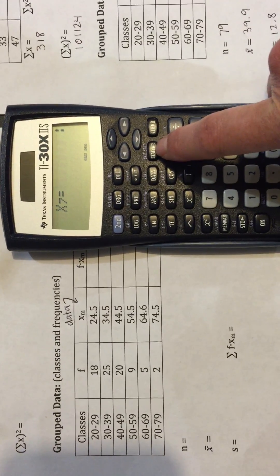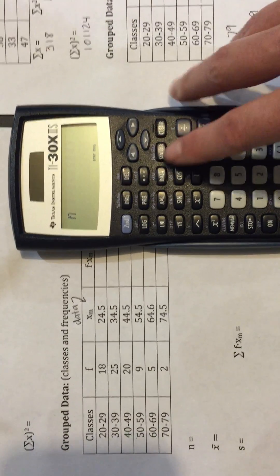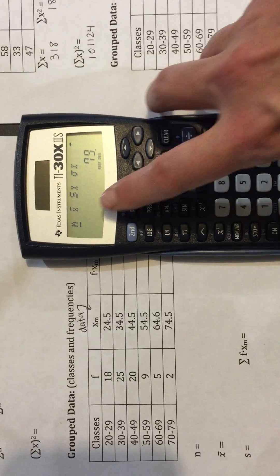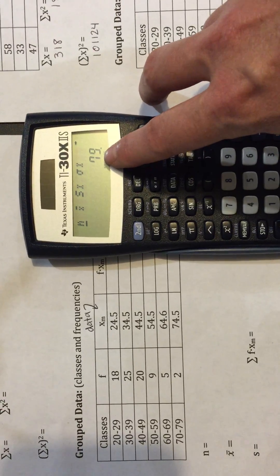Then STAT VAR will give you your answers. N, this tells us what we're looking at. The N is 79, number of items.